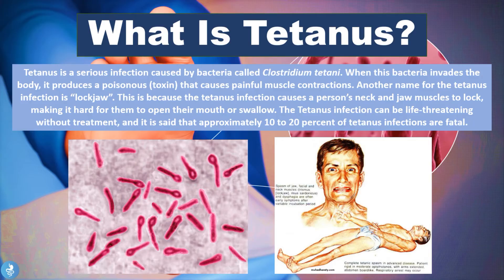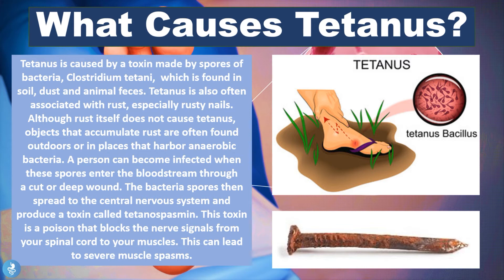Tetanus is caused by a toxin made by spores of the bacteria Clostridium tetani, which is found in soil, dust, and animal feces. Tetanus is also often associated with rust, especially rusty nails. Although the rust itself does not cause tetanus, the objects that accumulate rust are often found outdoors or in places that harbor anaerobic bacteria such as Clostridium tetani.